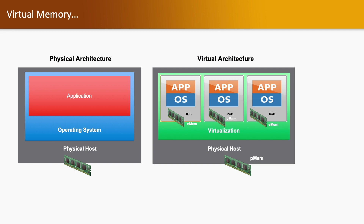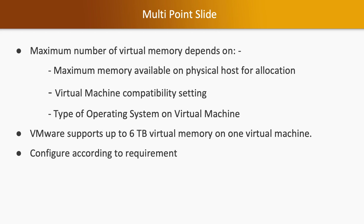Virtual memory works similarly. We have the physical host where physical memory is available. The operating system installed on that physical server assumes that the memory is assigned only to itself. But that is not the case in virtual architecture. The physical memory is allocated to multiple virtual machines, sharing resources in the form of virtual memory. You can also do over-commitment — if you have 8 GB of memory on the physical hardware, you can allocate that 8 GB to multiple virtual machines, but keep in mind that actual utilization will not go beyond the 8 GB. The maximum virtual memory depends on the maximum memory available on the physical host and the virtual machine compatibility settings.